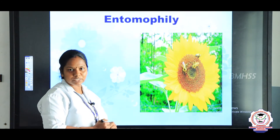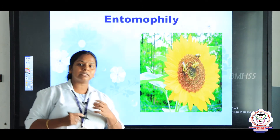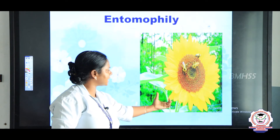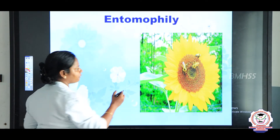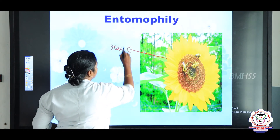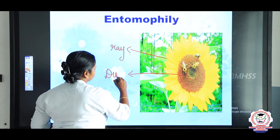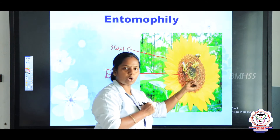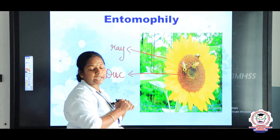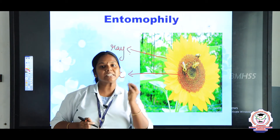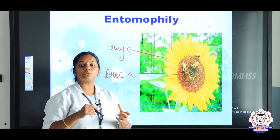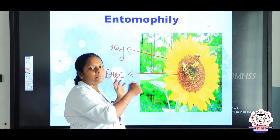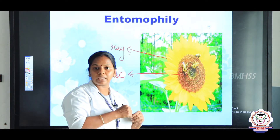Another character of entomophilous flowers is that some flowers are very small, so such flowers appear as inflorescence. The best example for inflorescence is sunflower, which possesses two types of florets: ray florets on the outside and disc florets in the center. Also, the pollen grains of entomophilous flowers must be rough or sticky, so that they easily stick to the legs or wings of the insects and are automatically transferred to another flower.